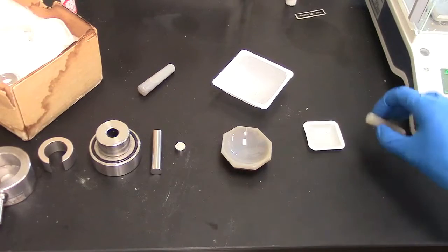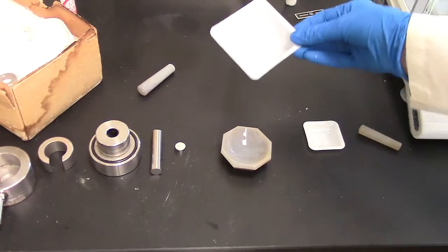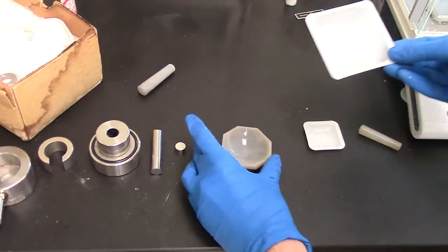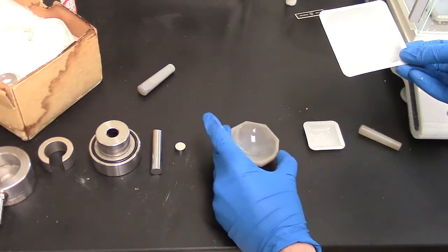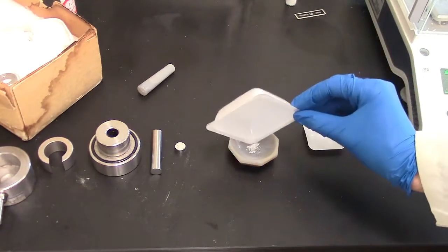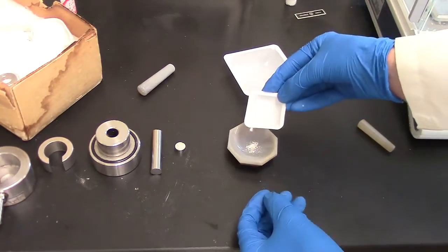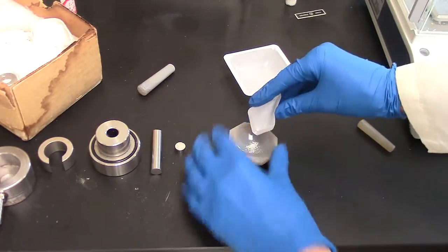The next step we'll want to do is to take our weighed out KBR and stick it in a clean grinding dish. We will also add in our two to three milligrams of our substance.